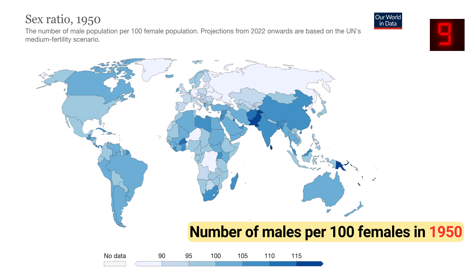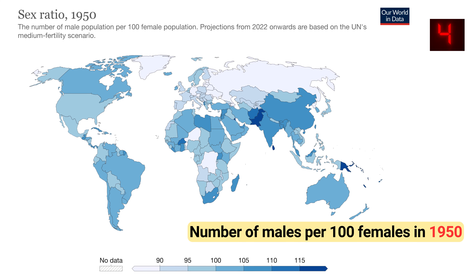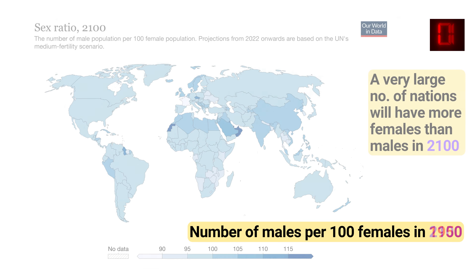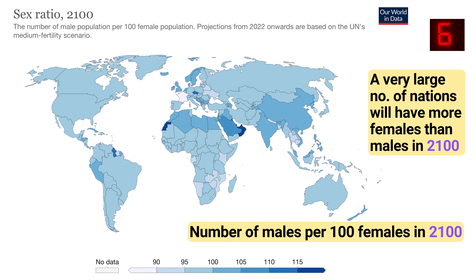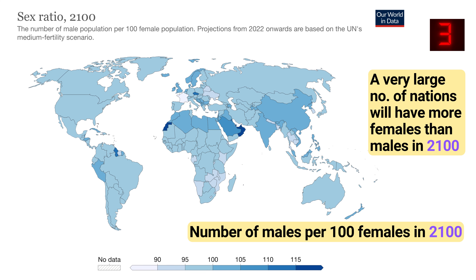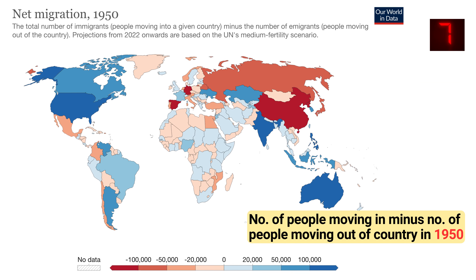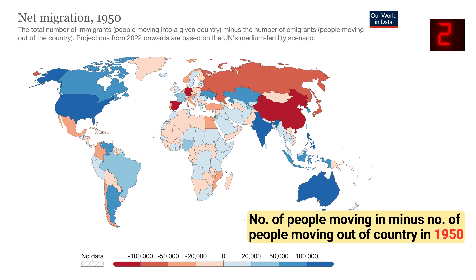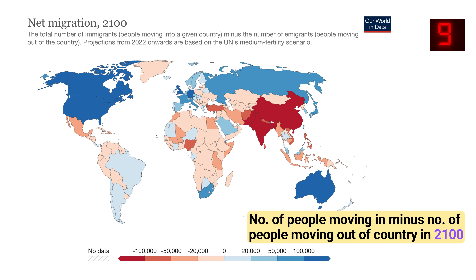Number of males per 100 females in 1950. Number of males per 100 females in 2100. Net migration in 1950. Net migration in 2100.